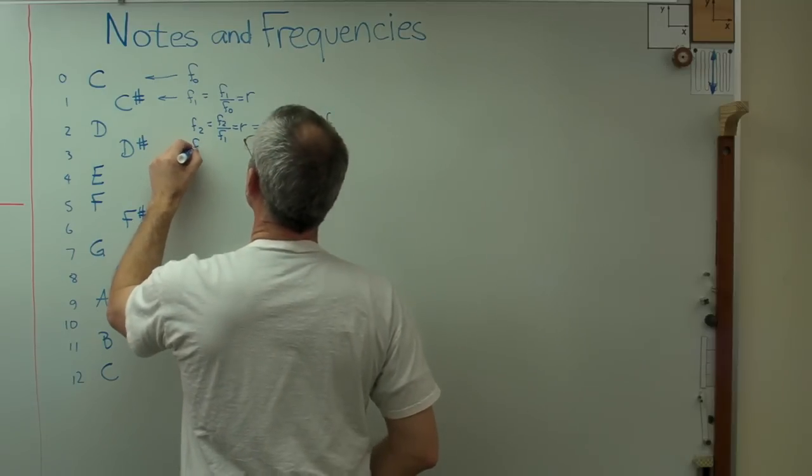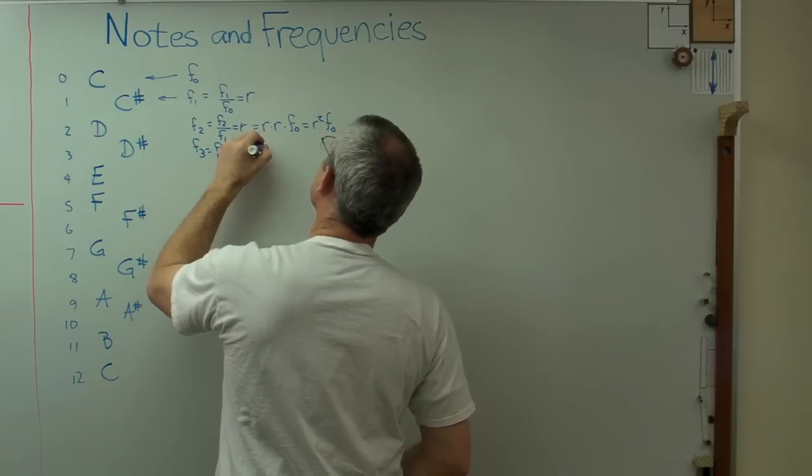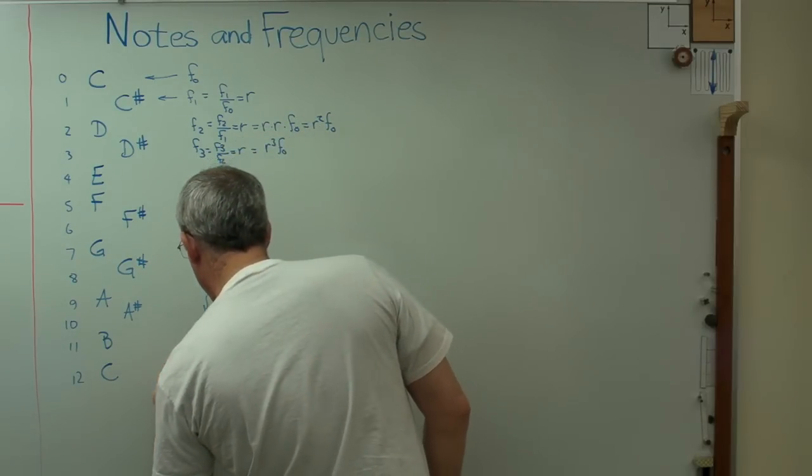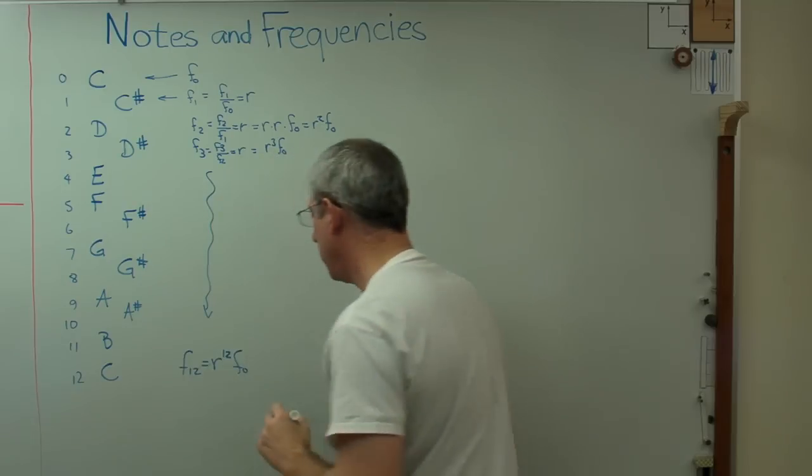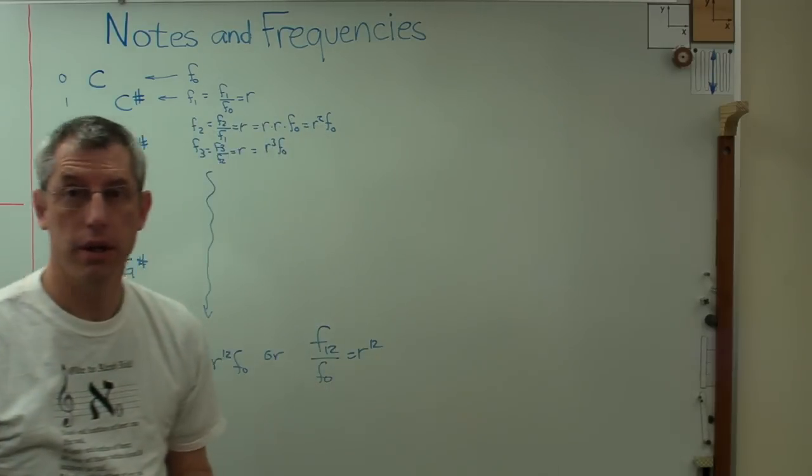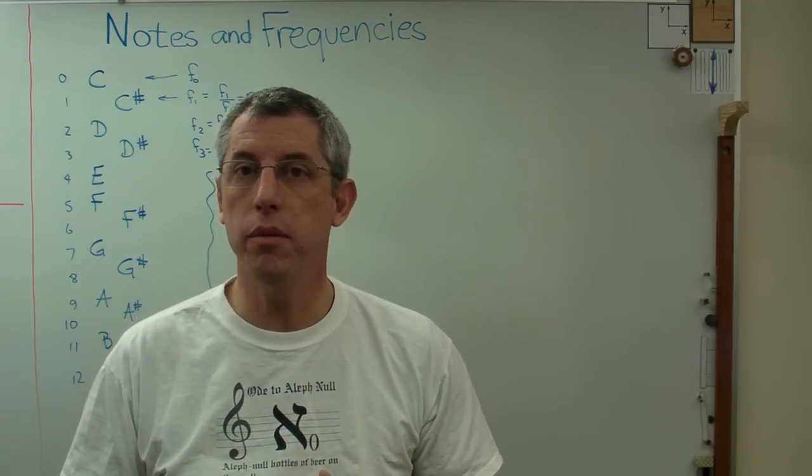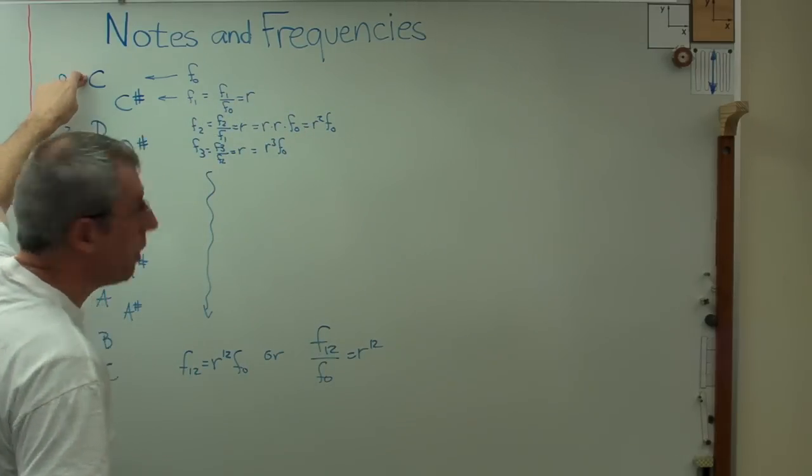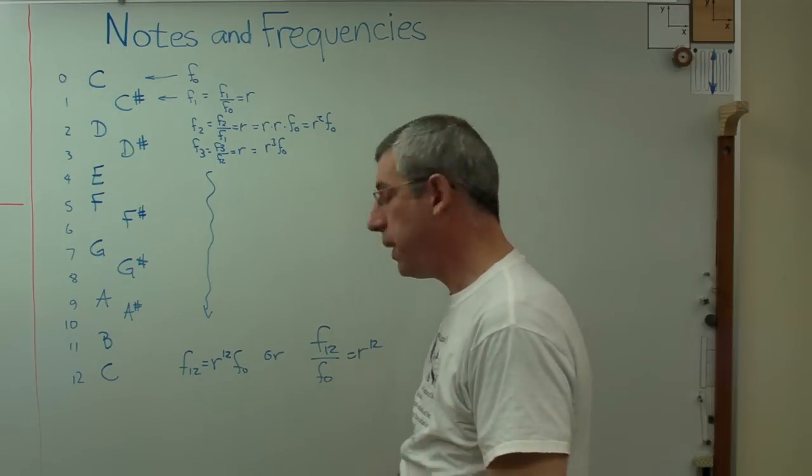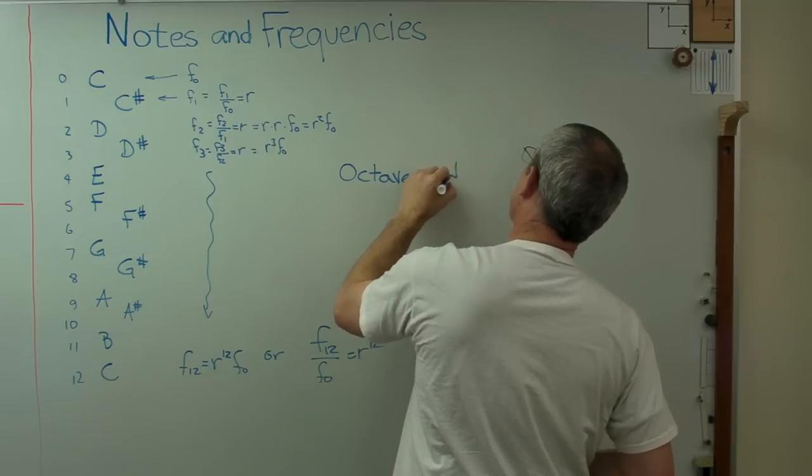Well, F3, guess what F3 is? F3 over F2 is also R and that means it's R cubed times F0 and so on. So we carry this pattern down and F12 is R to the 12th F0 or F12 over F0 equals R to the 12th power. Now this sounds pretty obscure. R to the 12th power, what do I do with this? There's one other bit of information that makes this useful. When I go from a note all the way through this series of 12 possible notes to the next one with the same name, the pitch doubles.